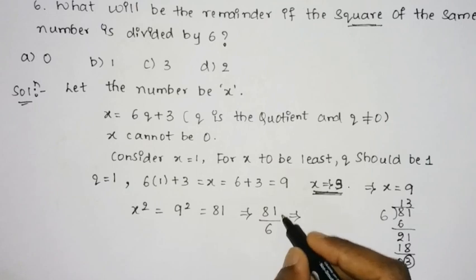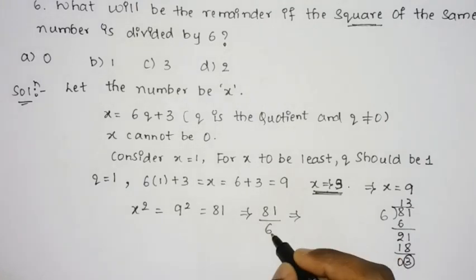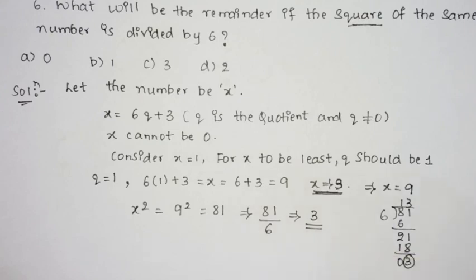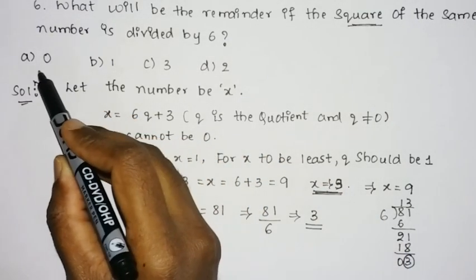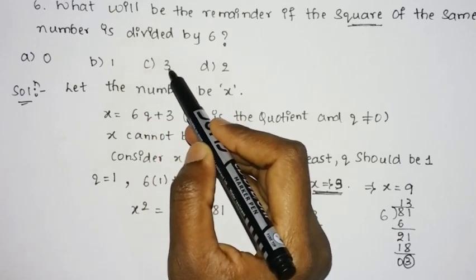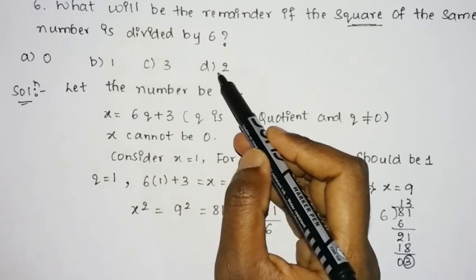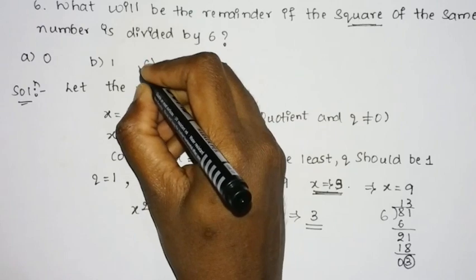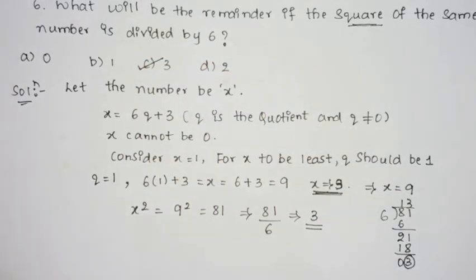So if the square of the number is divided by 6, the remainder is 3. The correct option is C, that is 3. Thank you friends for watching, and do subscribe to our channel for more updates.